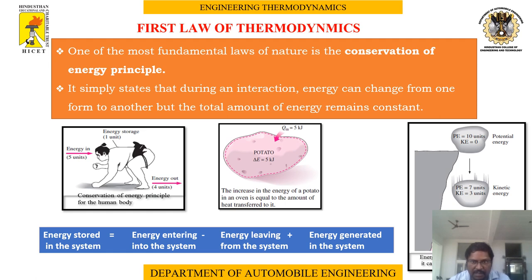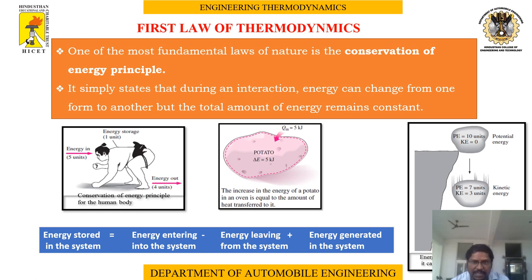Consider a rock falling from the top of a hill. Initially, the potential energy is ten units and kinetic energy is zero. As the rock falls from top to bottom, energy conversion takes place — potential energy decreases from ten units toward seven units, while kinetic energy increases from zero to three units, eventually becoming ten units of kinetic energy when the rock reaches the bottom, where potential energy is zero. Only energy conversion takes place. Per the conservation of energy, energy cannot be created nor destroyed, but it can be transformed from one form to another.